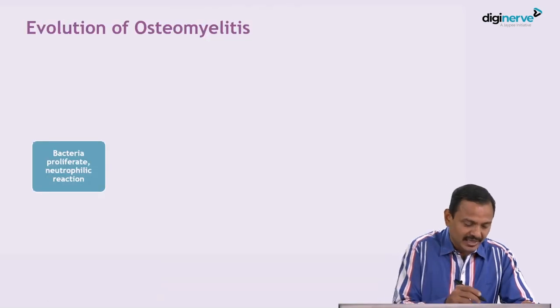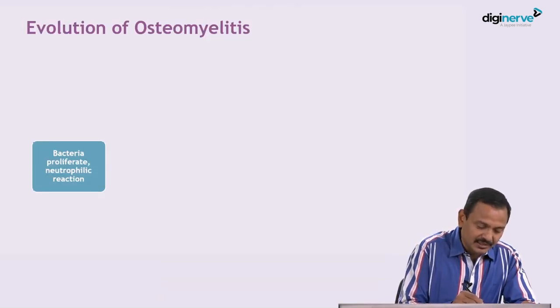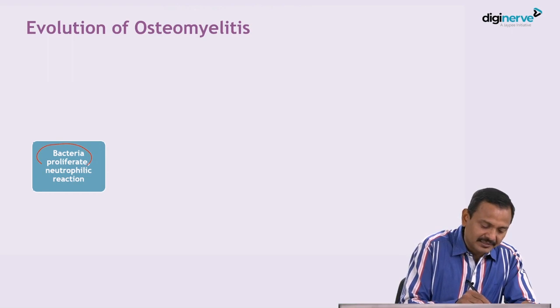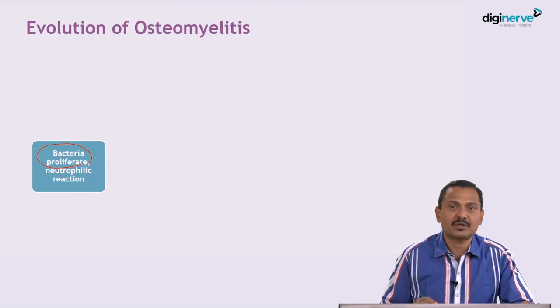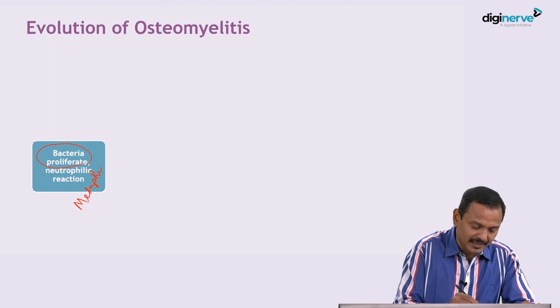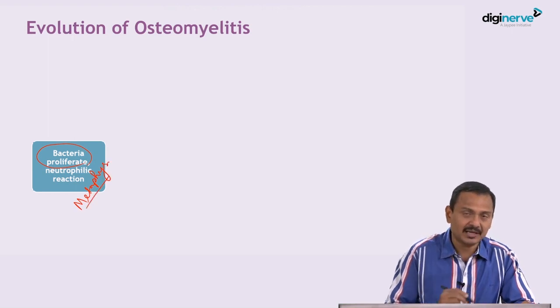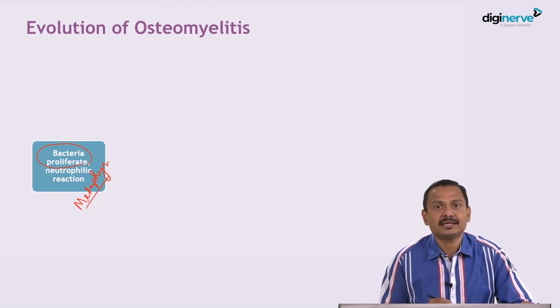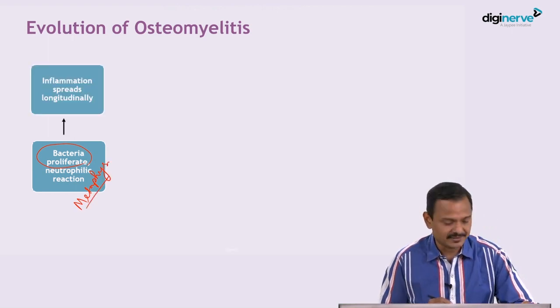Osteomyelitis evolves, or how the pathogenesis of osteomyelitis happens. There is a bacterial infection and bacteria will proliferate mostly at the metaphysis. Bacteria proliferate at the metaphysis.